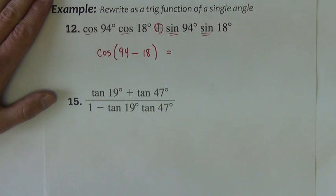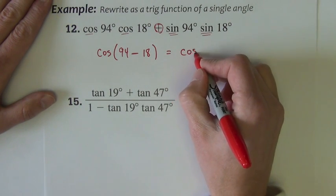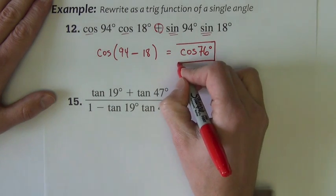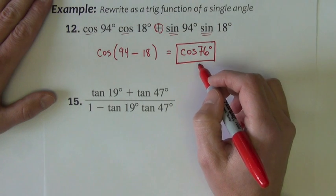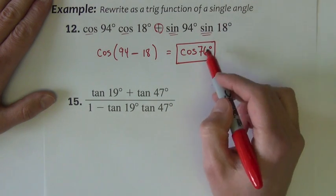So we want cosine of 94 minus 18. 94 minus 18 is 76. So this is cosine of 76 degrees. Doesn't ask me to evaluate this. It just asks me to write it as the trig function of a single angle. We have that.